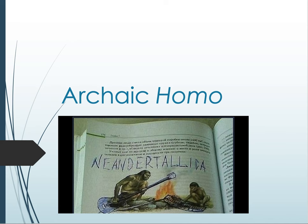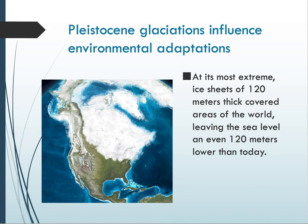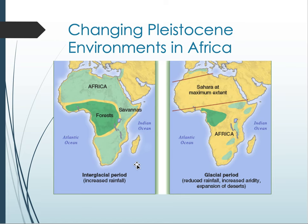I wanted to start the archaic homo PowerPoint with a little bit of information about climate change, because prior to this, up until about 2.5 million years ago, the climate in Africa where hominins are evolving is relatively stable and consistent. As a result, there's not a lot of major changes. It's not until Homo habilis when we start to see rapid fluctuations of climate in Africa, with wet and dry cycles.